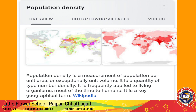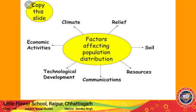Next topic is population density. Population density is a measurement of population per unit area or exceptional unit volume. It is a quantity of type number density, frequently applied to living organisms, most often to humans, and is a key geographical term. Population density is expressed per square kilometer. The average density of world population is 51 per square kilometer, and South Central Asia has the highest population density.